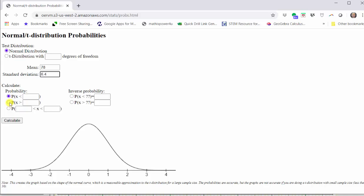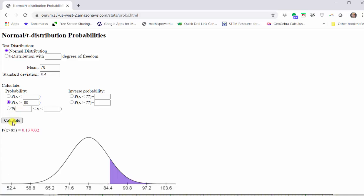Because we're looking for the probability that x is greater than 85, we select the option where the inequality is greater than, and then enter the test score of 85, and then click calculate. The probability shows below in red. Looking at the graph below, notice how we have the area shaded under the normal distribution curve to the right of 85.